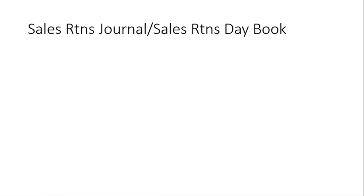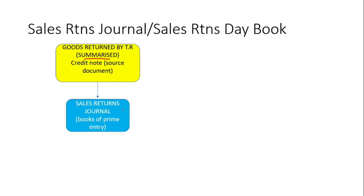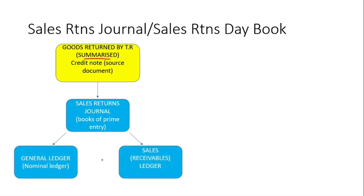Next we have the Sales Returns Journal. It records transactions where goods are returned by our customers. These transactions are summarized and then put into the Sales Returns Journal. All the summarized information will then be put into two ledgers: one will be the General Ledger and the other will be the Sales Ledger. For the General Ledger we're going to debit the Sales Returns Account and credit the Trade Receivables Account in the Sales Ledger.